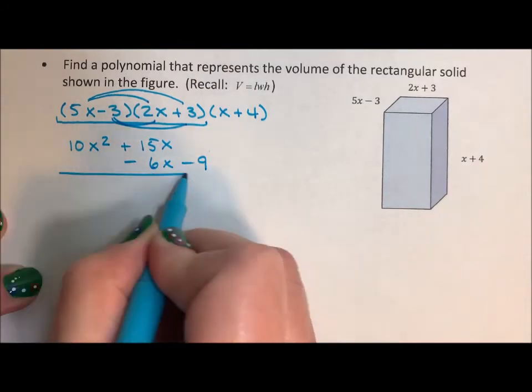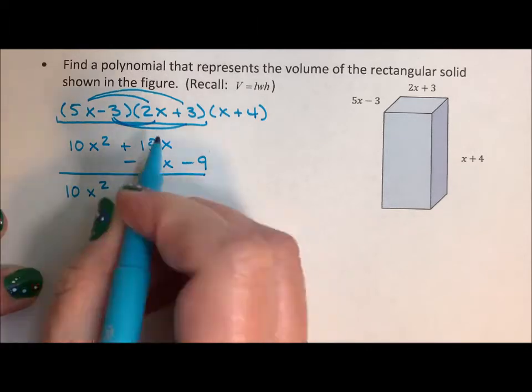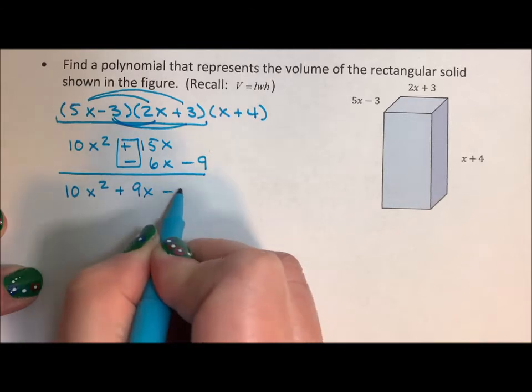And of course, I'm going to stack my like terms. So I have 10x squared. Let's see, the positives are going to win. Plus 9x minus 9.